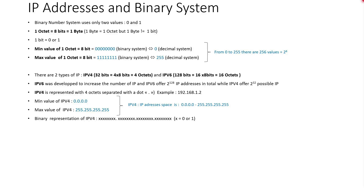The next point: 1 bit can be equal to 0 or 1. The minimum value of 1 octet is 8 bits all set to 0. This value is equal to 0 in decimal system. The maximum value of 1 octet is 8 bits all set to 1, and this value is equal to 255 in decimal system. And from 0 to 255, we have 256 possible values. This is equal to 2 to the power of 8.